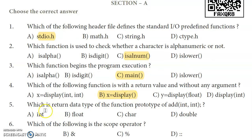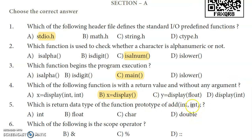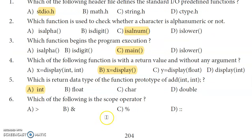Fifth question: what is the return datatype of this function prototype — add of int, int? This prototype is used to add two integer values. Option A is the answer. Sixth question: which of the following is the scope operator?